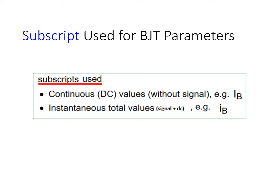When both are capital, that means it is representing the DC value — so this is DC current. But when the first one is a small letter and the second one is a capital letter, that means it is representing an instantaneous value, which may include AC and DC as well.